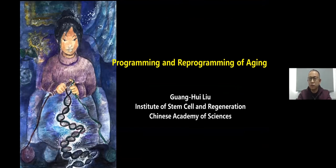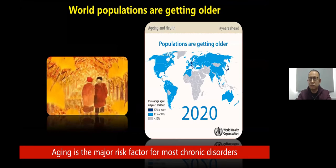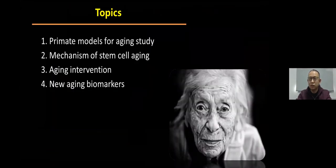As we all know, the world population is getting older. Importantly, aging is the main risk factor for most chronic diseases. I will discuss the following topics today: primate models for aging study, mechanism of stem cell aging, aging intervention, and lastly, new aging biomarkers.